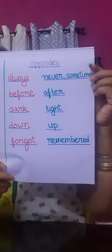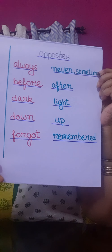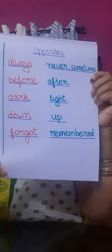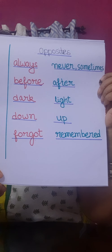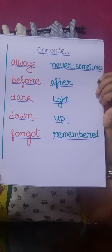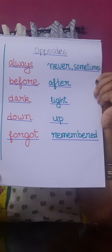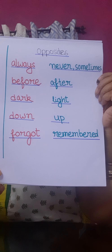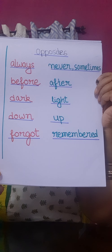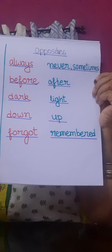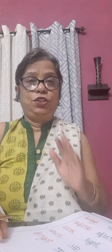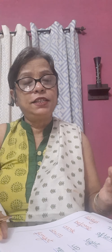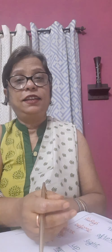Now there are some opposites. I know all of you know these words — it's very easy. Always, opposite is never or sometimes. Before — after. Dark — light. Down — up. Forgot — remembered. Forgot is in past tense, so the opposite is remembered. Present tense is forget and the opposite is remember.